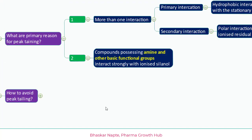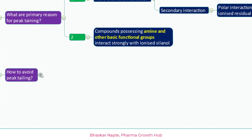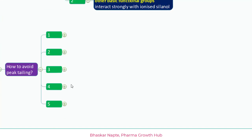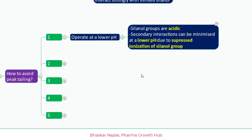Now we understand the two important reasons for peak tailing. In the next section we will talk about five important points to avoid peak tailing. The first one is to operate at a lower pH — make your mobile phase with a lower, acidic pH. The reason is that silanol groups are highly acidic in nature. Comparing type A silica and type B silica, type A silica is highly acidic whereas type B silica is weaker in acidity.